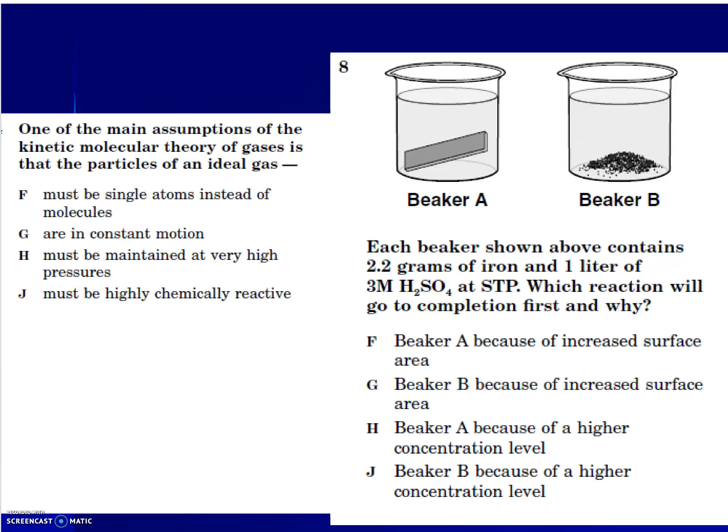Okay, so just to review, these are from some previous SOL tests. Let's go over this. One of the main assumptions of the kinetic molecular theory of gases is that the particles of an ideal gas are in constant motion. They must be in motion. Each beaker shown above has 2.2 grams of iron and 1 liter of 3 molar sulfuric acid at standard temperature and pressure.